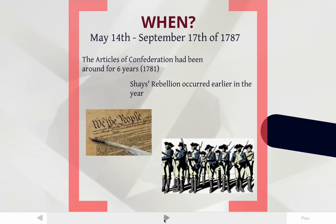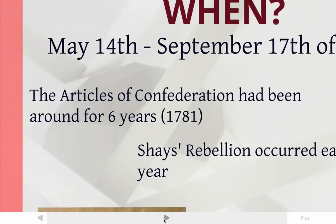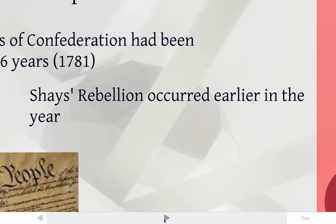On to the when. This event took place May 14th through September 17th of 1787. It took the delegates a long time — they were in Philadelphia for months doing this work. By 1787, the Articles of Confederation had been around for six years and that government was failing. Shays' Rebellion, another important event, had just happened toward the end of 1786 into the beginning of 1787, so it was only a few months after Shays' Rebellion occurred.